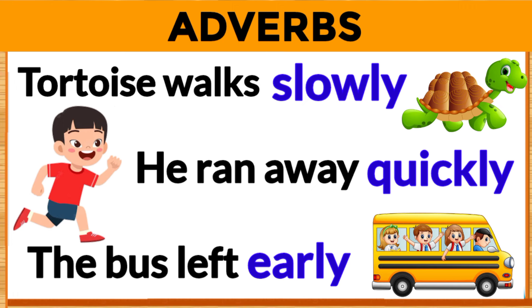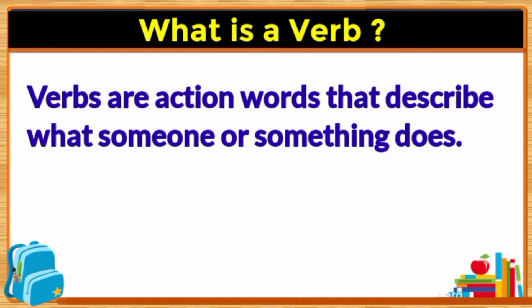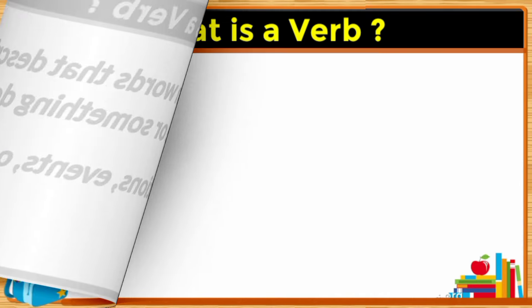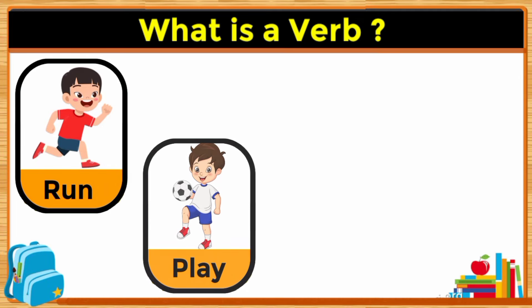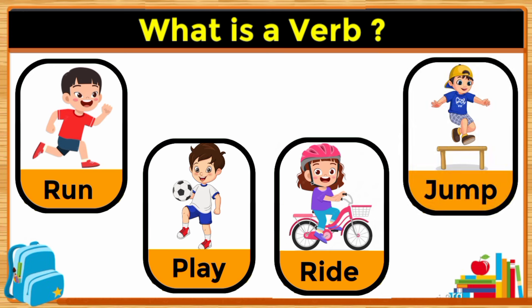Let's learn about what adverbs are, but first let's understand what verbs are. Verbs are action words that describe what someone or something does — they show actions, events, or state of being. For example, run, play, ride, or jump — all these words denote some kind of action done by children, so these are verbs.